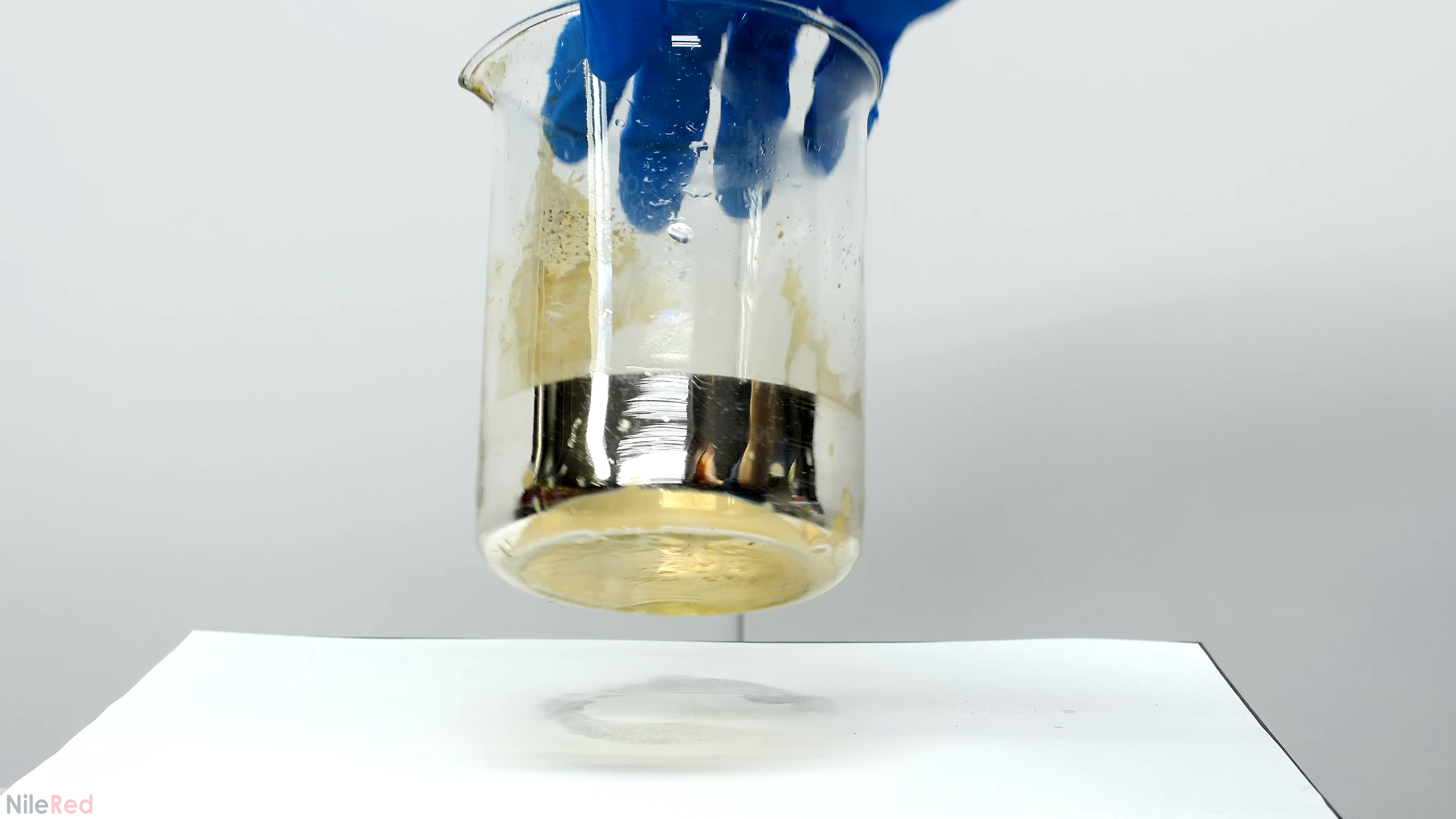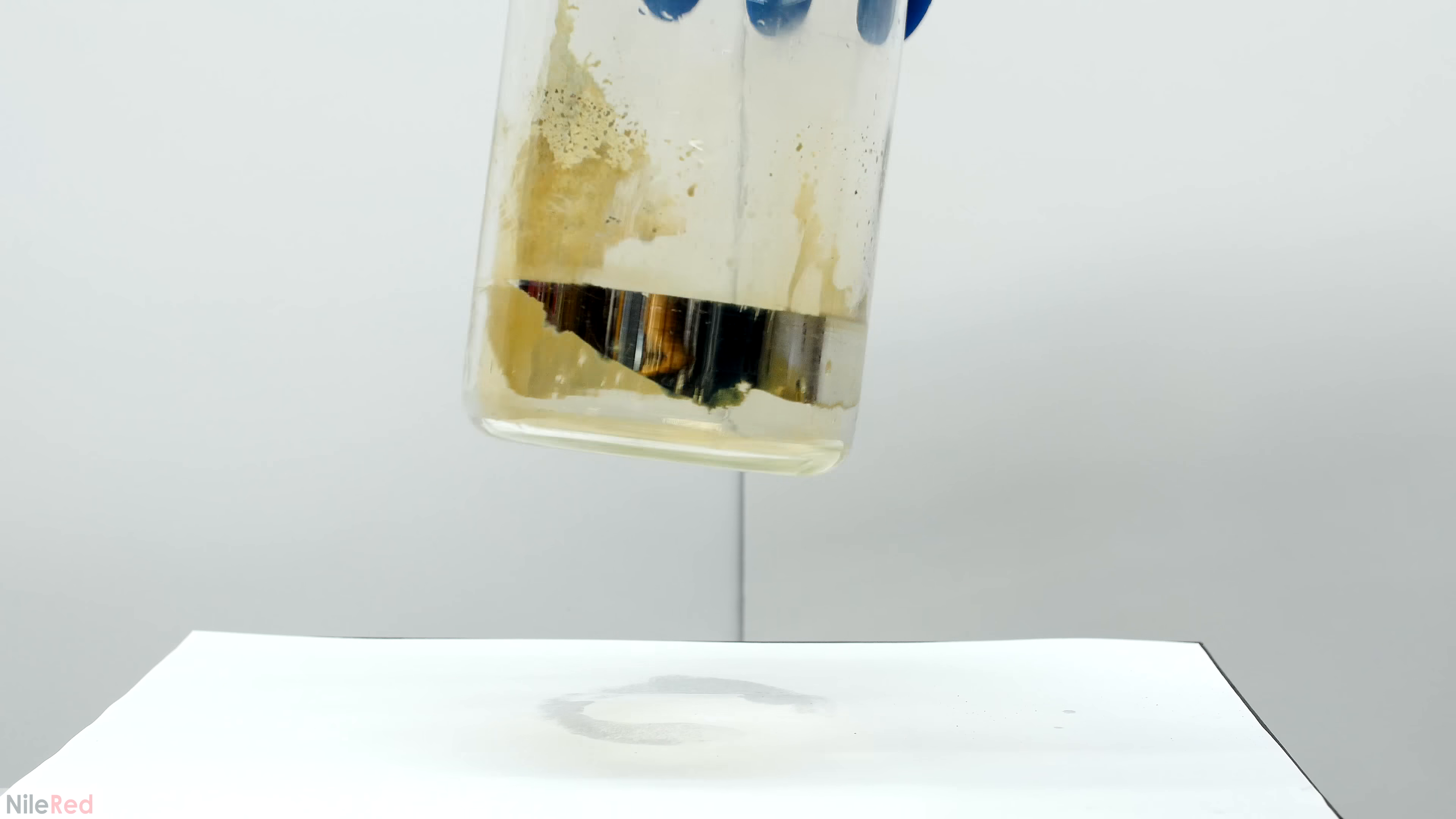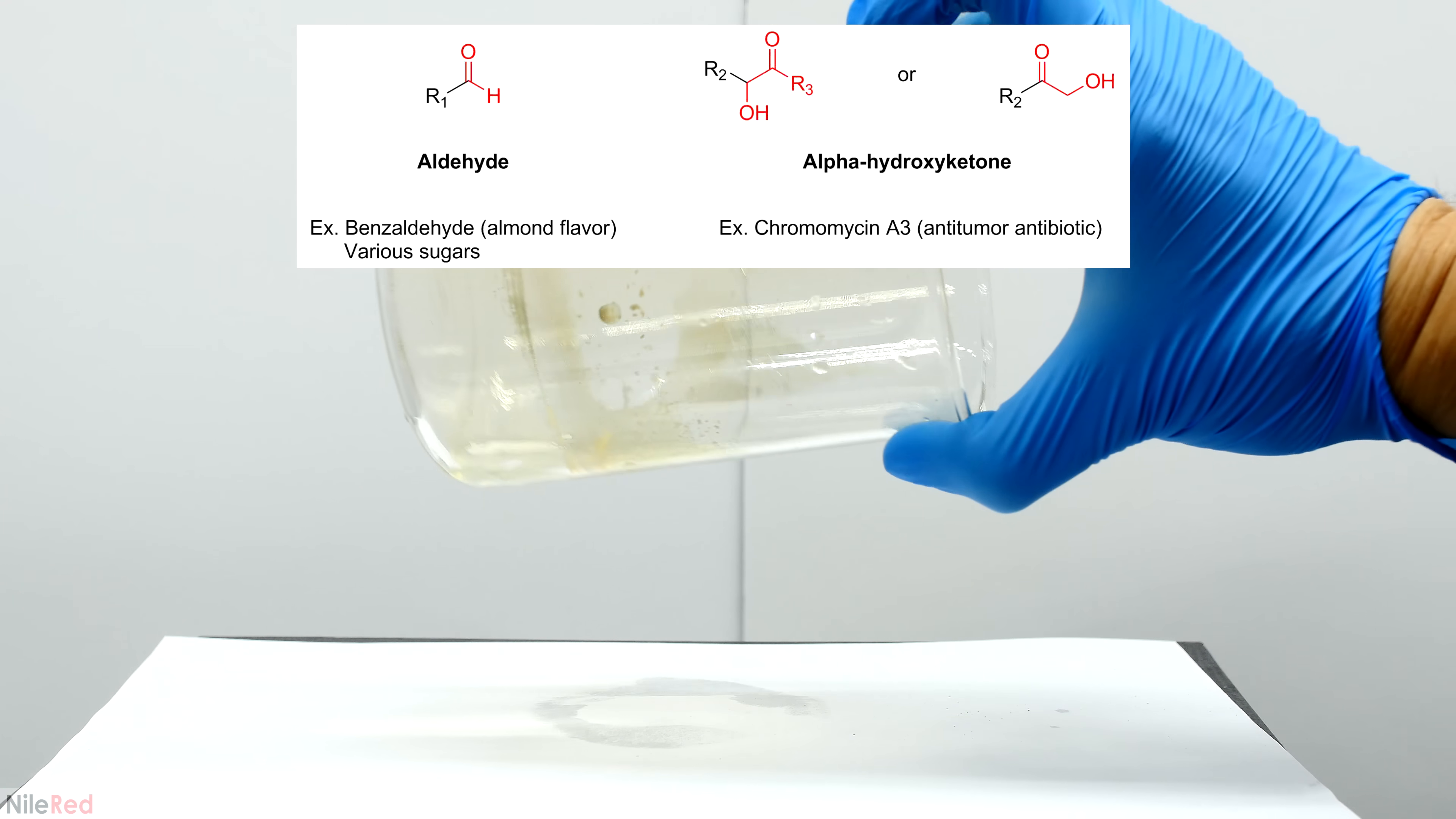That's about it for the silver mirror demo, and now I want to do some real Tollens tests. The most common use of the Tollens test is to determine whether an unknown contains either an aldehyde or an alpha hydroxy ketone. If the unknown does contain either of these groups, we'll get the same reaction that we just saw, and a mirror will form.